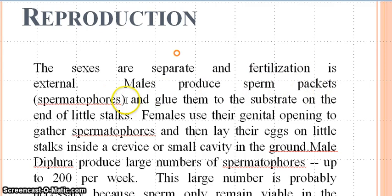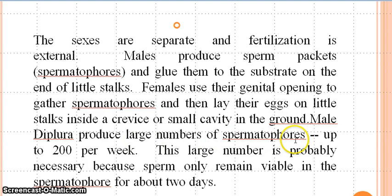In reproduction, they have separate sexes and fertilization is external. Males produce sperm packets known as spermatophores and glue them to the substrate with the help of a little stalk. Females use their genital opening or ovipositor to pick up these spermatophores, and they lay their eggs on little stalks inside a crevice or small cavity in the ground. Male Diplura produce a large number of spermatophores — up to 200 per week — probably because sperm remain viable in the spermatophore for only about two days, after which the sperm are dead and unable to fertilize eggs.